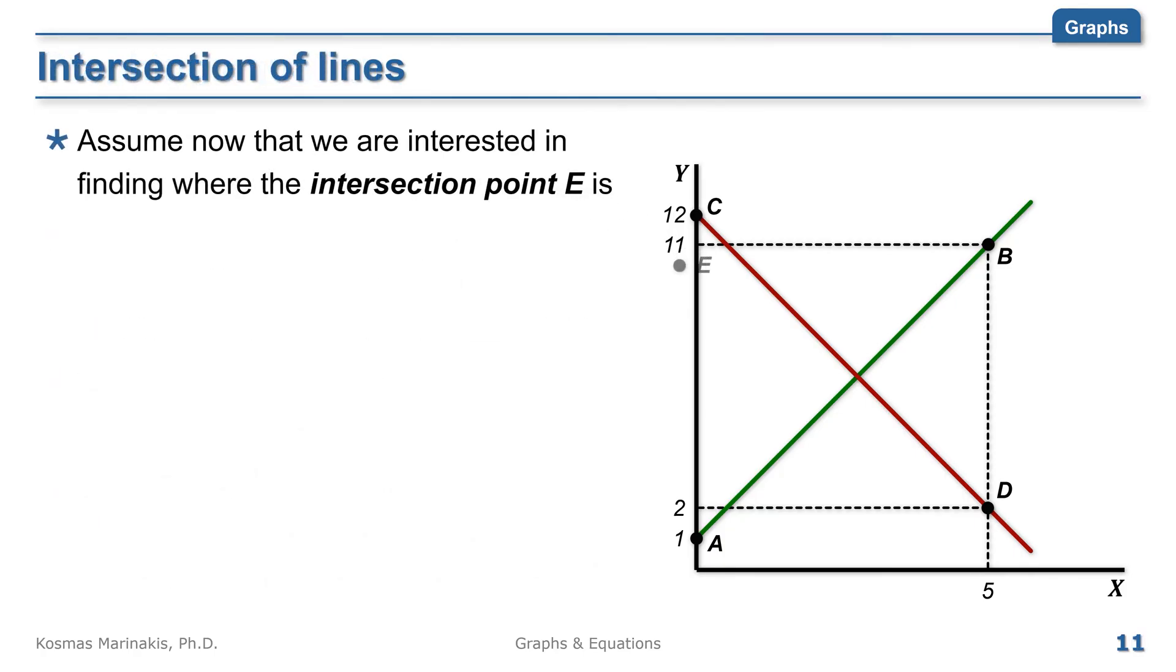Assume now that we are interested in finding where the intersection point E is. If we want to just use the graph, we can eyeball it around x equals 3 and y equals 6. But obviously, this method is not very precise.